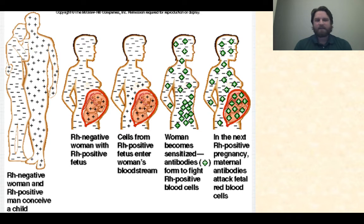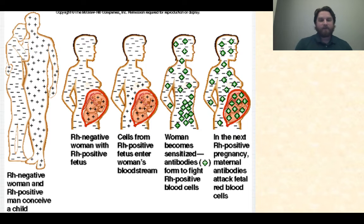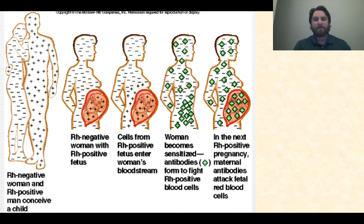An interesting fact people often ask about is the positive and negative in blood types — like A positive or O negative. This relates to RH type. If an RH positive man and an RH negative woman conceive a child who is RH positive, the fetal blood mixes a little with the mother's, causing her to form antibodies against positive blood types. This doesn't hurt the fetus the first time, but if she has a second child with positive blood, her antibodies can attack the fetus's red blood cells. Fortunately, there are treatments for that — just a shot.